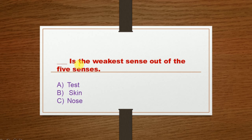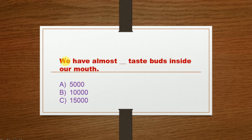Next question: Dash is the weakest sense out of the five senses. Option A: Taste, Option B: Skin, Option C: Nose. The correct option is Option A: Taste.